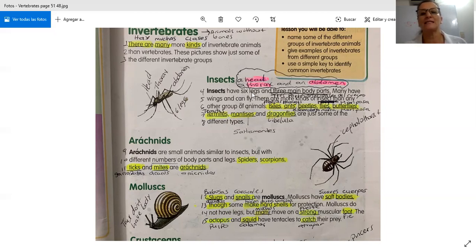Okay, those insects have six legs. One, two, three, four, five, six. And three main body parts. A head, a thorax, and abdomen. Head, thorax, and abdomen.